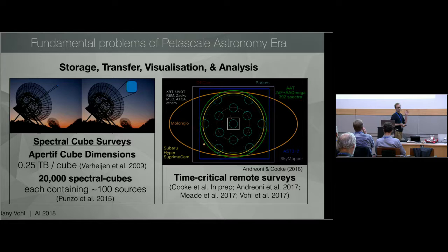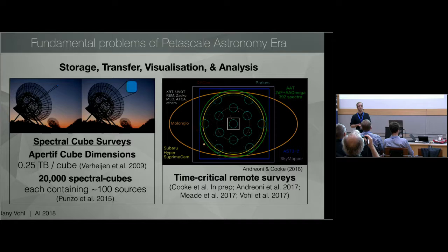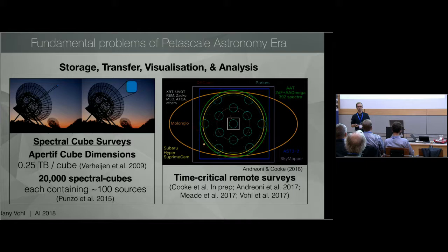For time domain astronomy there are challenges of data access and storage, and often you need to do that very quickly. But computing facilities at observatories are not always designed for post-processing — most computation is for data collection. If you want to do post-processing and find transients very quickly, and you're not living next door to the telescope, you're going to have to transfer data to a remote location. How do you do that quickly when dealing with loads and loads of data?